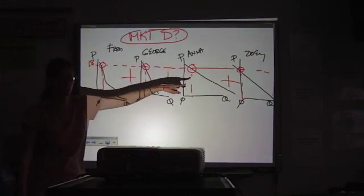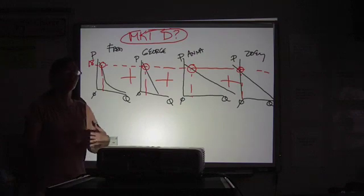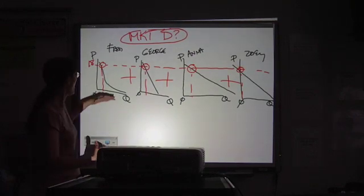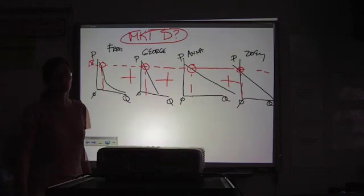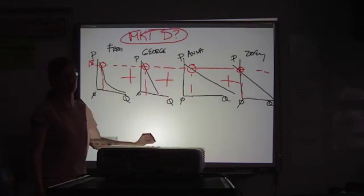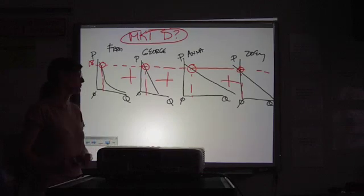You don't add the prices across because price is your independent variable, but you do add the quantities because quantity depends on price. So, that's how we go from the individual to the market, and that is something that you might have to do.